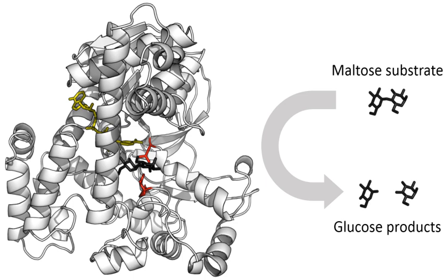Enzyme denaturation is normally linked to temperatures above a species' normal level. As a result, enzymes from bacteria living in volcanic environments such as hot springs are prized by industrial users for their ability to function at high temperatures, allowing enzyme-catalyzed reactions to be operated at a very high rate. Enzymes are usually much larger than their substrates. Sizes range from just 62 amino acid residues, for the monomer of 4-oxalocrotonate tautomerase, to over 2,500 residues in the animal fatty acid synthase.